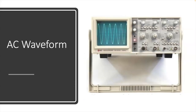If you were to connect an oscilloscope to your wall outlet, this is what it would look like. This is an AC waveform. If you notice, it's oscillating. We know that in the United States it oscillates at 60 hertz, which is 60 times per second. Right now you need to understand that if you are in the United States and you have 120 volts in your wall outlet, this is what your voltage would look like oscillating at 60 hertz. The AC waveform constantly goes from a positive peak to a negative peak — 60 times a second.